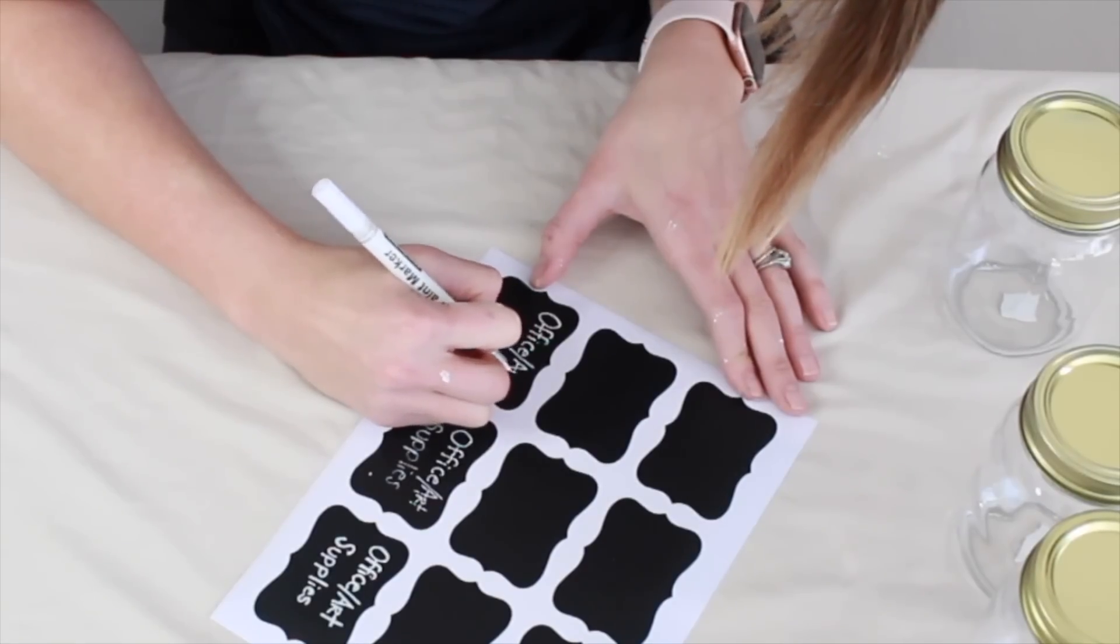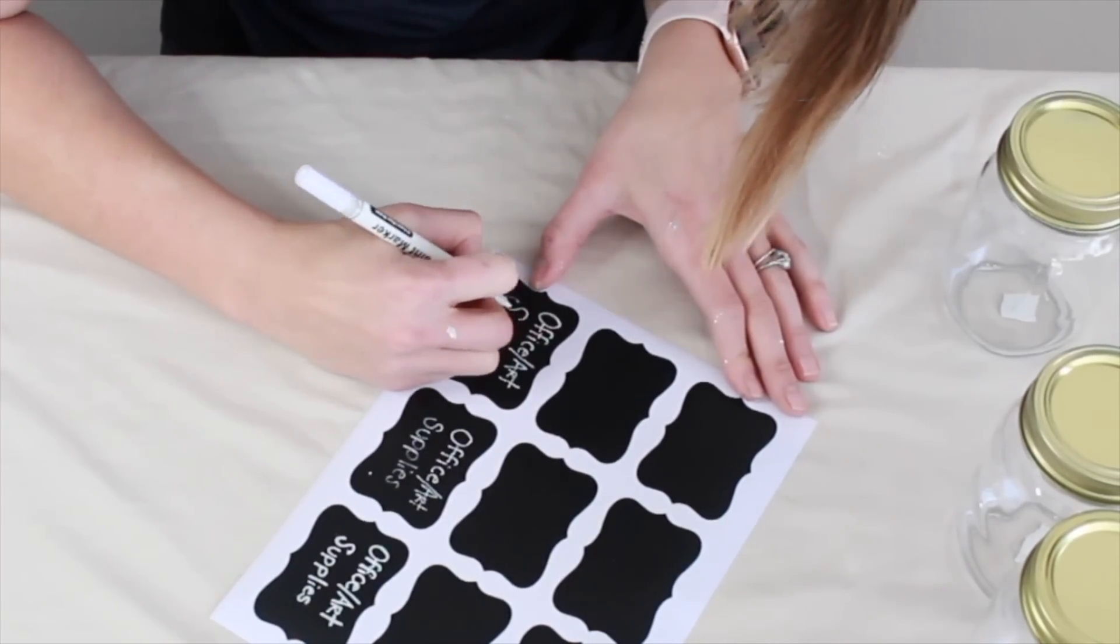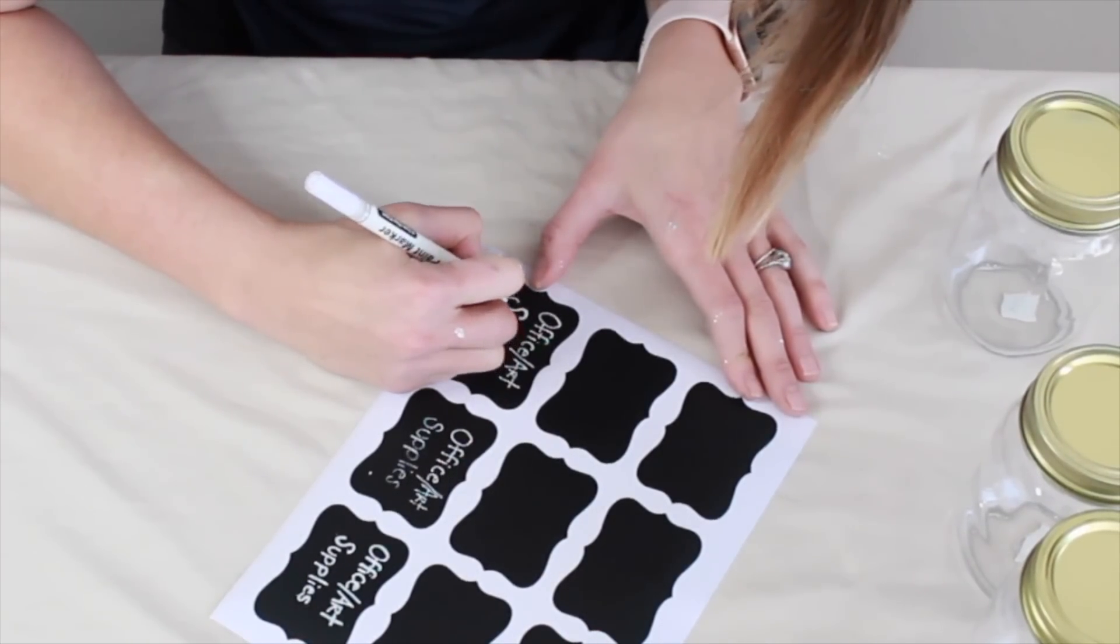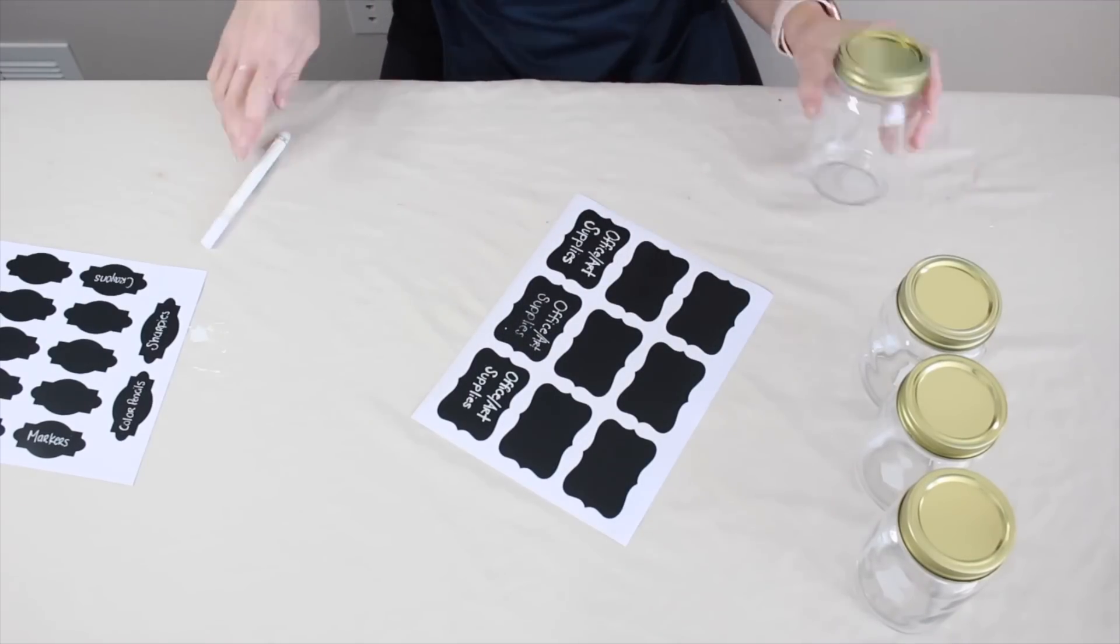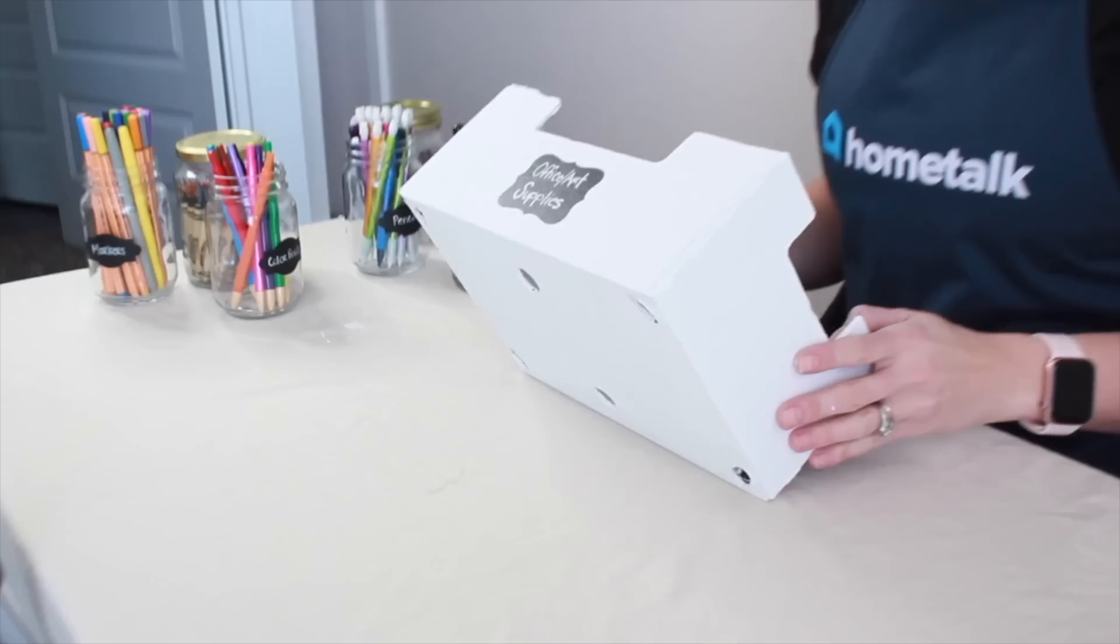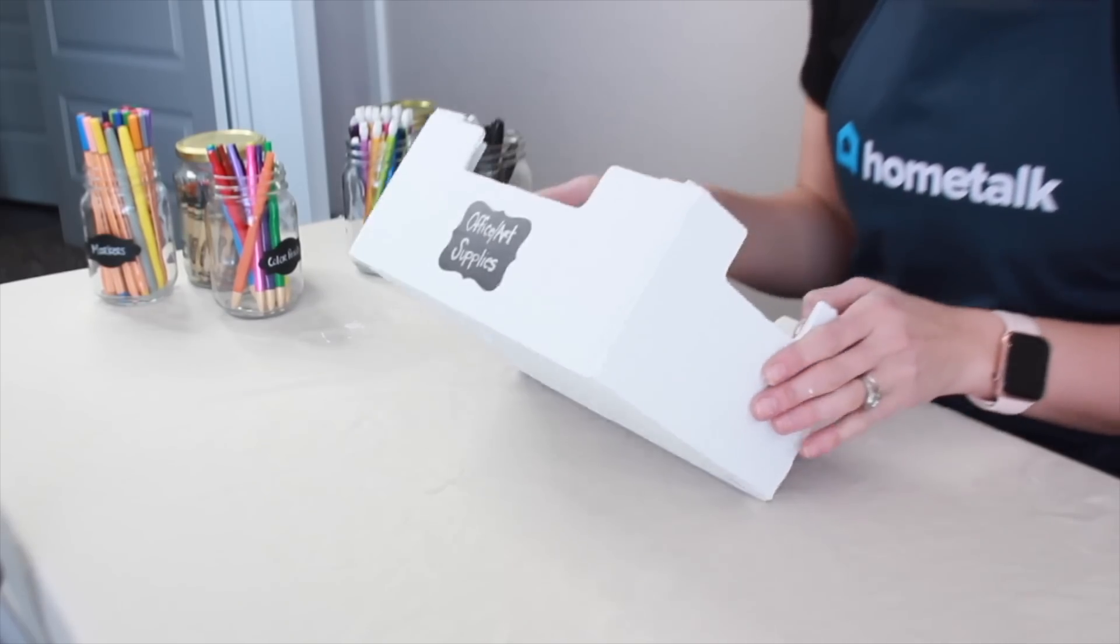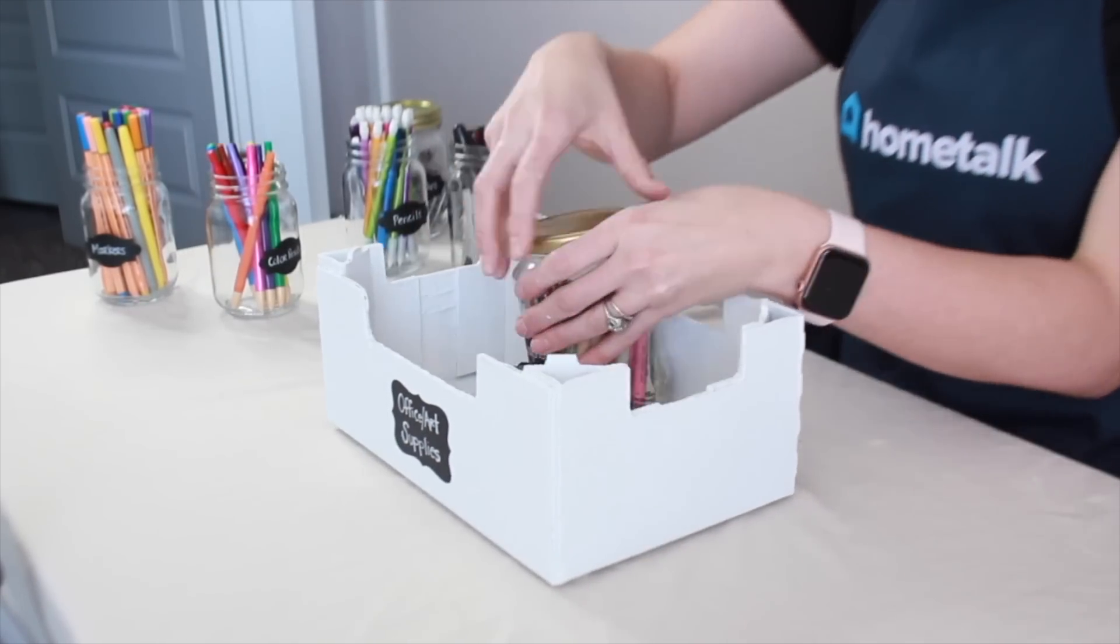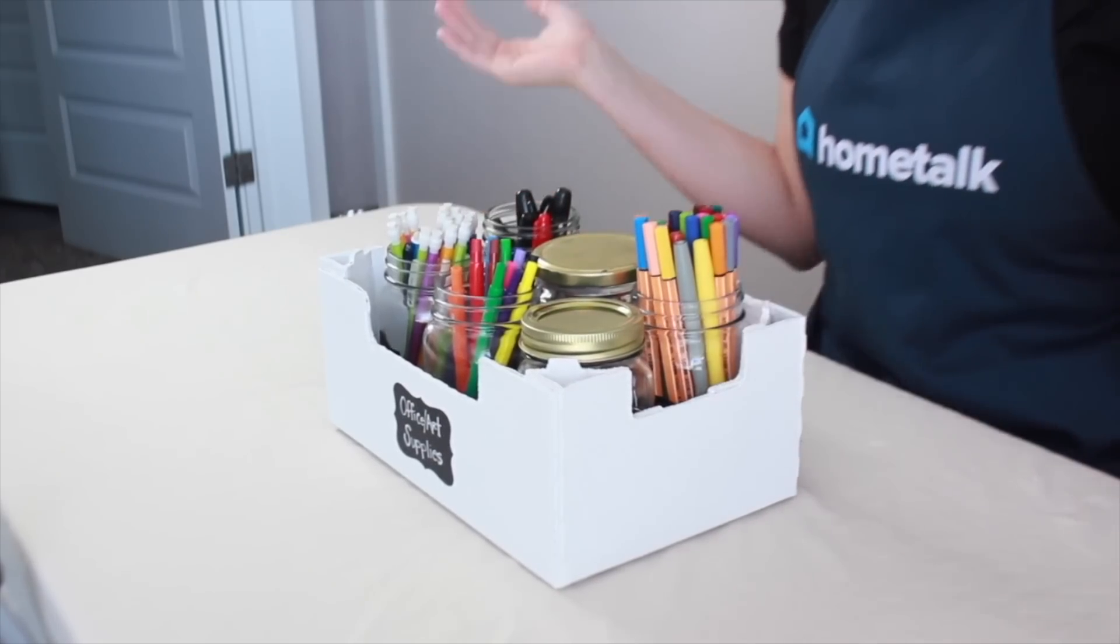We're going to use the bigger chalkboard label for the actual outside of the box. So I'm going to write office slash art supplies. Alright, so now I'm going to start sticking my labels on my jars and then we're going to fill them up. So we have our chalkboard label on the front just saying what's going to be in this organizer. And we're going to load it up with our jars. And there we have it. Here is our organizer. Now let's see what it looks like on my desk.